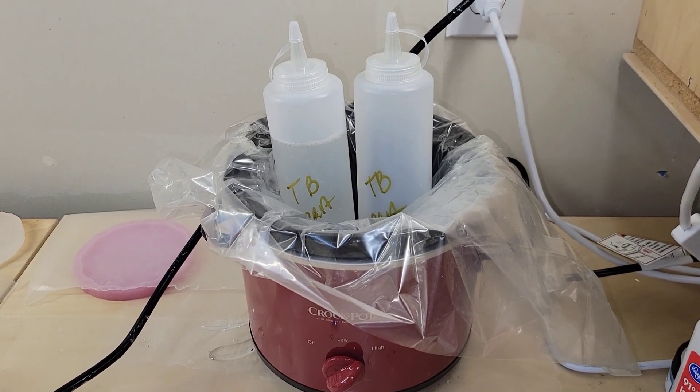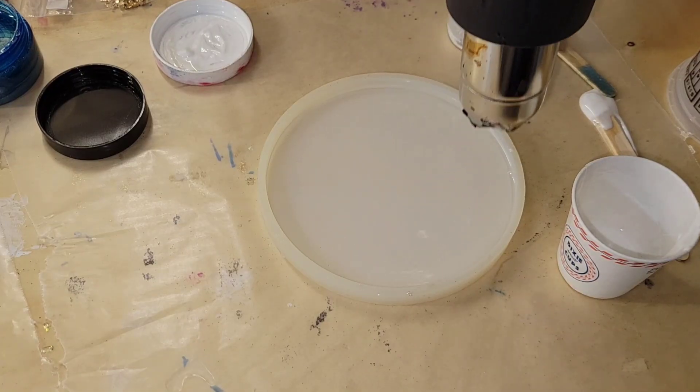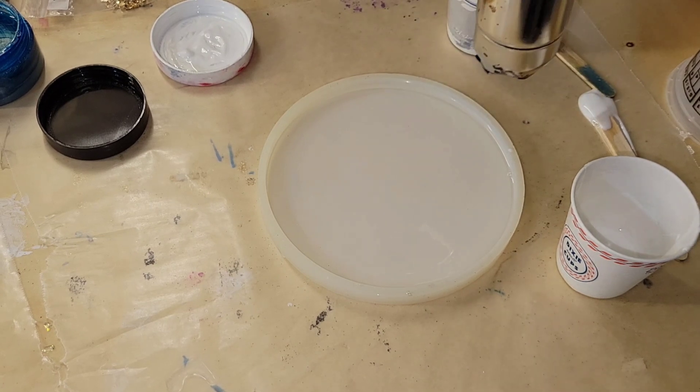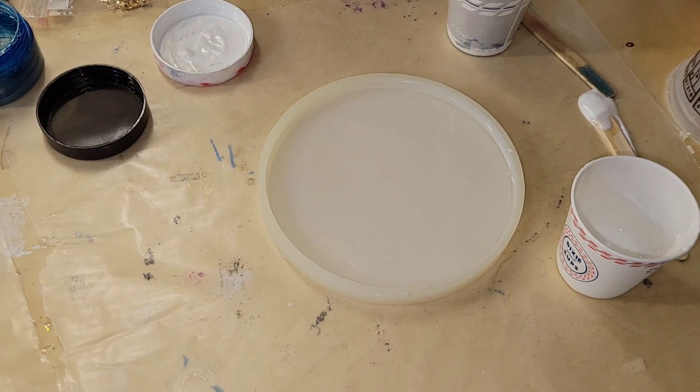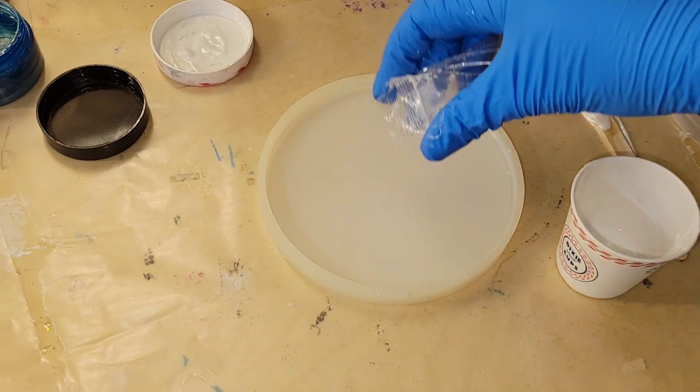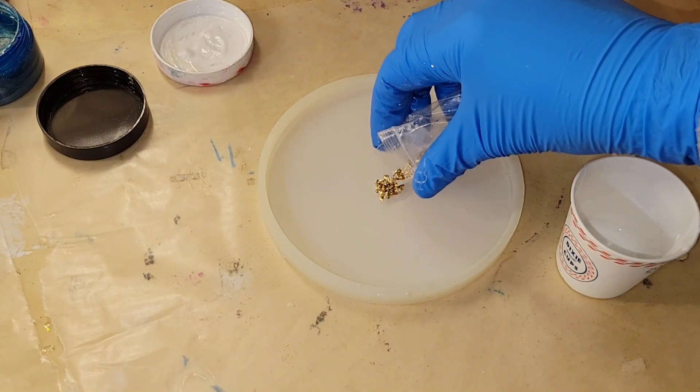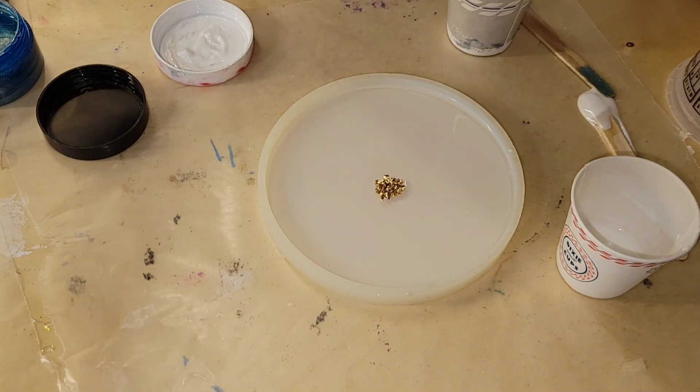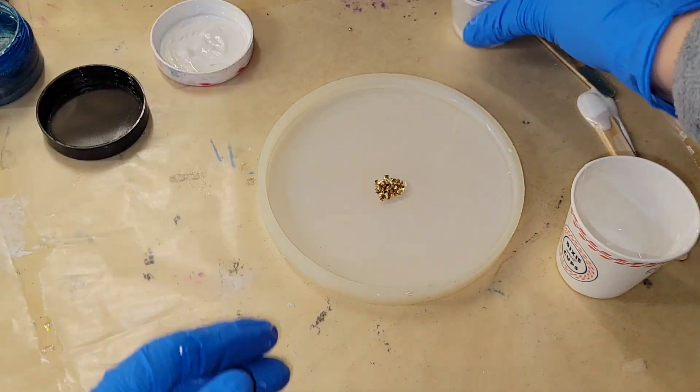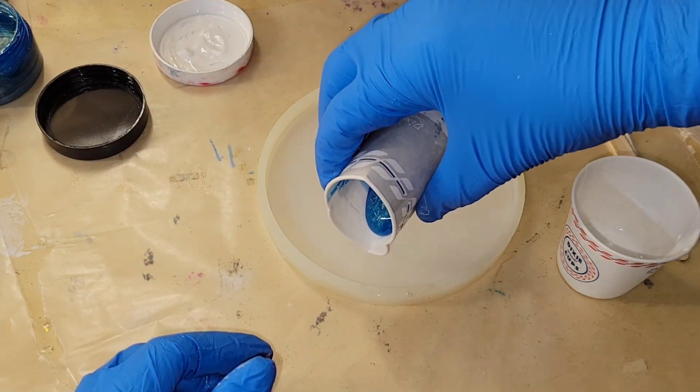It's going to reduce your bubbles dramatically—you're not going to have hardly any bubbles when you mix up your resin. I recommend doing this, especially now since it's getting colder. You can get the little crock pot off Amazon for like 12 bucks. I'll link it down below. It really works well to heat up your resin.